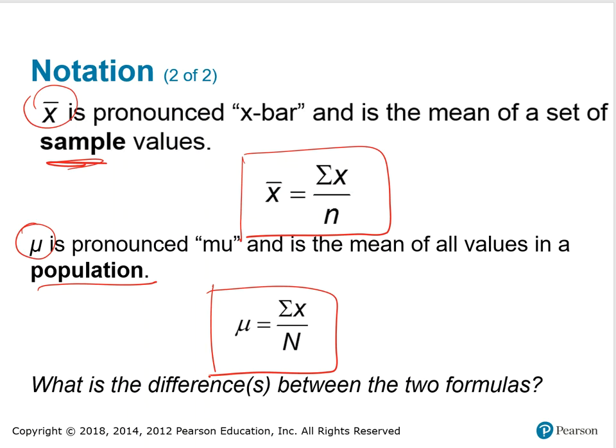Note the use of the symbols. Here we have x-bar for sample mean, lowercase x, lowercase n. Here we have mu for the population mean, still a lowercase x, but notice the capital N to denote that we have all the elements in the population and not just a sample.